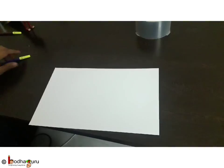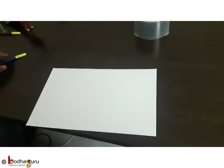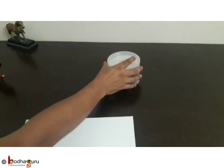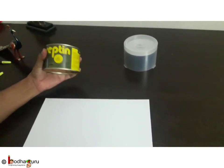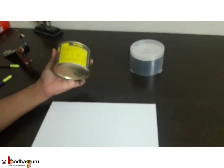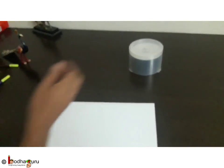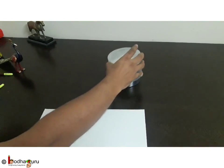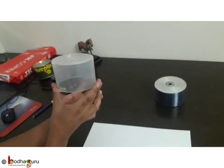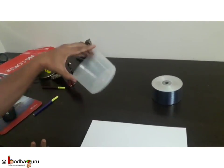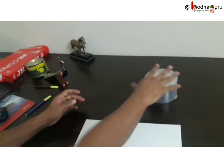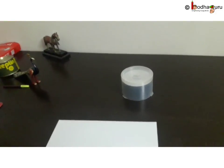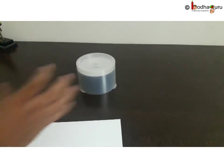Hello friends, in this lesson we shall learn how to find the volume of a cylinder. Here is a small biscuit box which looks like a cylinder, and here is another box which is a cover of a rack of DVDs — which also is a cylinder, ignore the two rough edges. So let's try to find the volume of this cylinder — that is, how much is the space occupied by it.